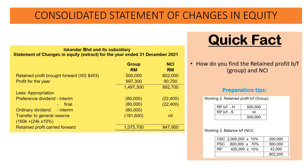Then we have to deduct the preference dividend for the interim. For the interim, the group deducts 80,000. For the NCI we deduct 22,400. The figure of 22,400 is derived from the interim dividend of the subsidiary of 32,000, which we can see in the original question, multiplied by the NCI percentage of 70%. So 32,000 multiplied by 70% gives 22,400 for the NCI.